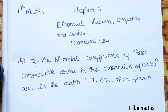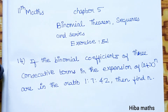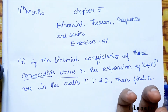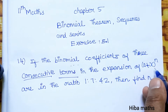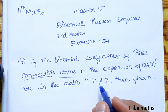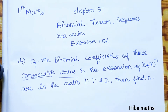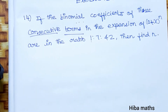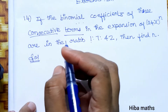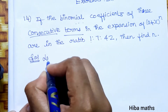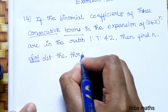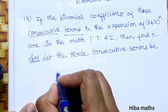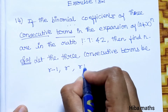The three consecutive terms in the expansion of (a + x)^n follow the pattern a-d, a, a+d. Let the three consecutive terms be r-1, r, and r+1.